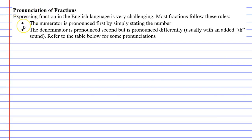I've outlined two rules below which work for most fractions. The first rule says the numerator is pronounced first by simply stating the number. The second rule says that the denominator is pronounced second, but differently - usually we add 'th'. This is where things get complicated because it's not always like this. I'm going to show you some basic fractions that follow these two rules, and then situations where we have to break these rules.